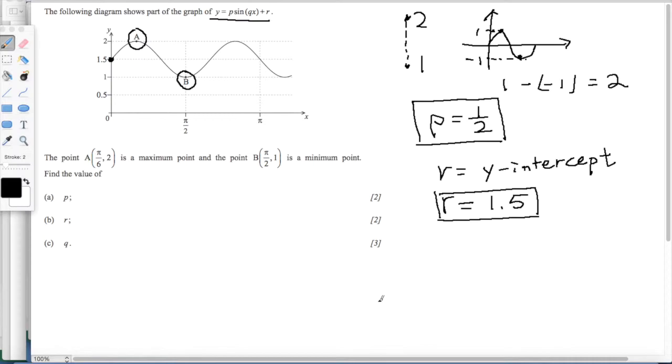q is a bit tricky, but we have two points actually. We know that from point a, it is pi over 6, 2. So we can substitute this point into the equation, which is 2 equal to half sin q times pi over 6 plus 3 over 2.